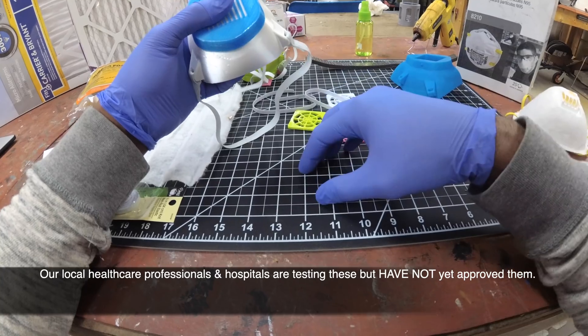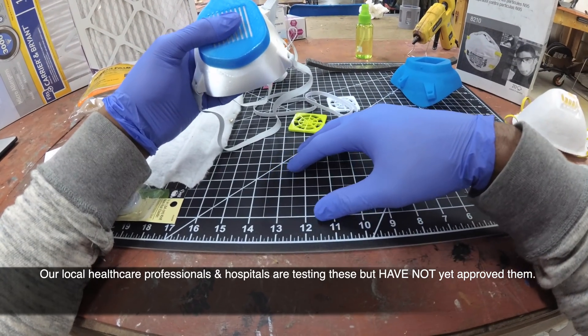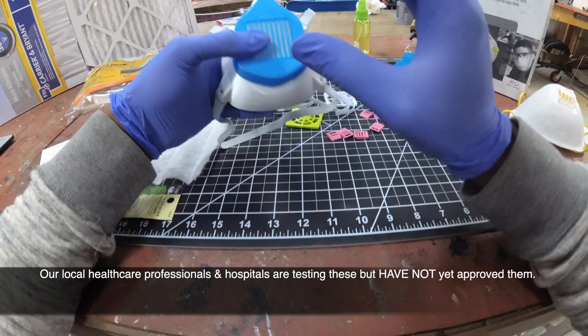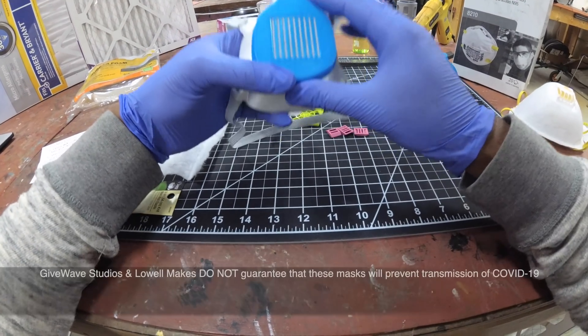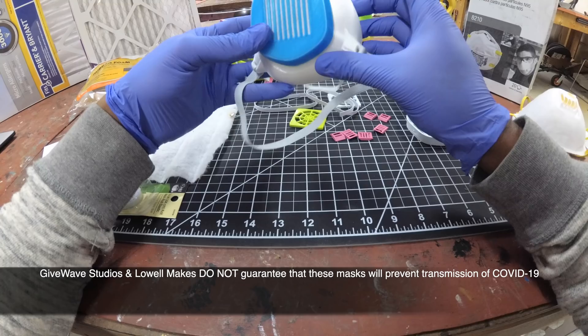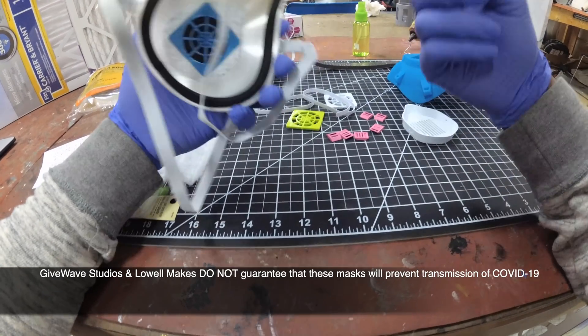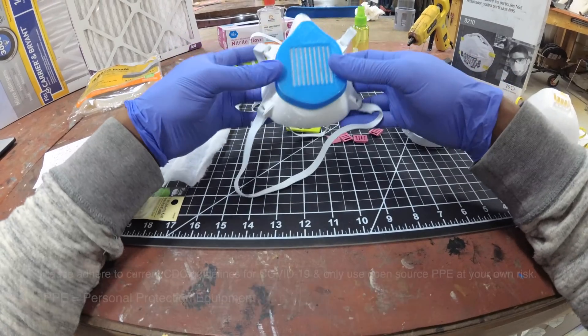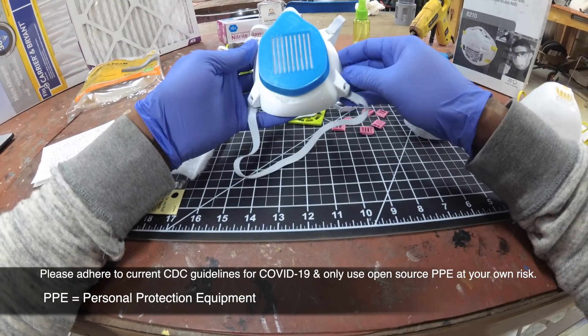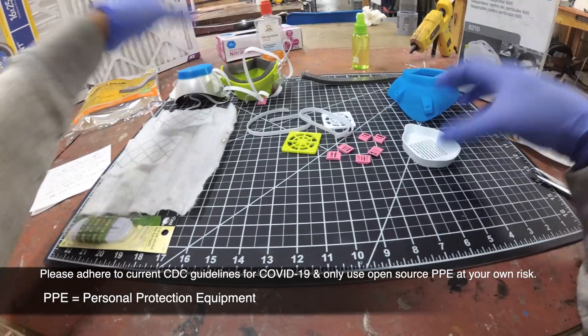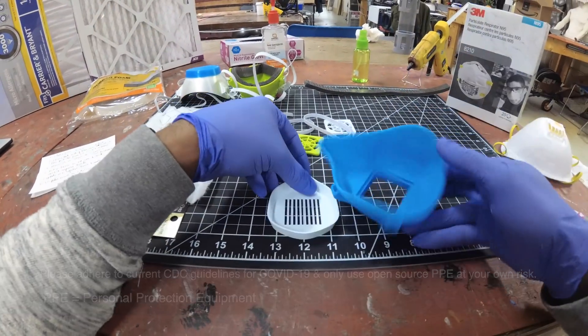This is just the process that we ourselves go through in putting these together to send out to our local hospitals. So let's get right into it. The mask comes in three parts, or you could say five parts if you count the little 3D printed clips.